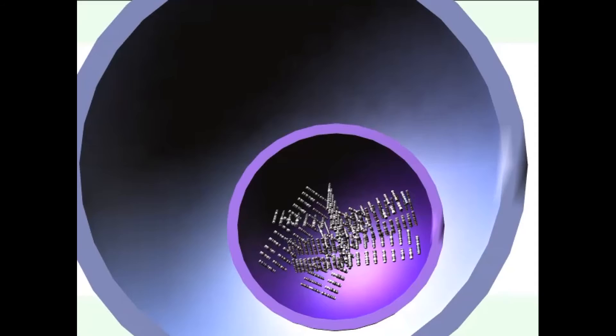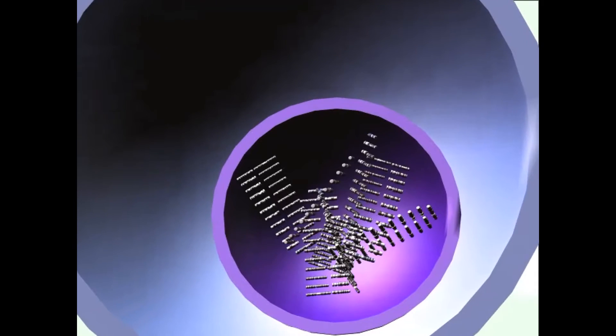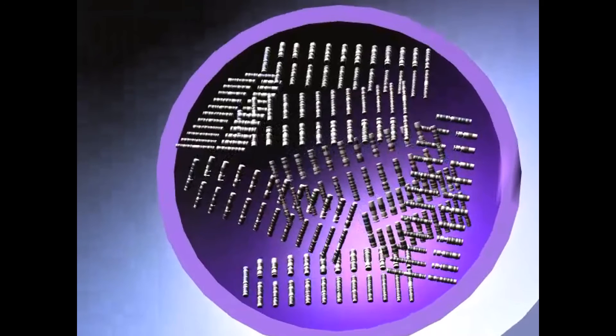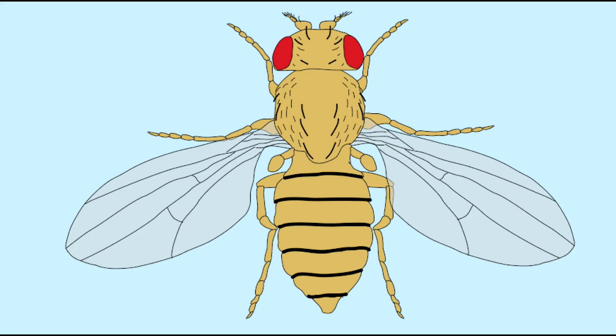This occurs because these cells undergo endoreplication, where their DNA is replicated in preparation for mitosis, but the cell never completes telophase and cytokinesis, so that the extra chromosomes accumulate in the nucleus.